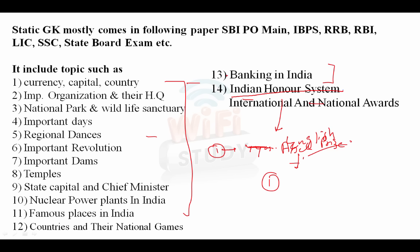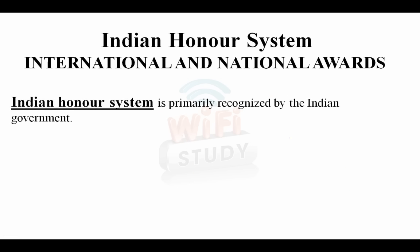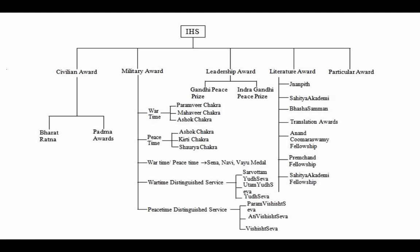The Indian honor system is primarily recognized by the Indian government. It is divided into five categories in which different awards are given. First is the civilian award — Bharat Ratna and Padma Awards. Bharat Ratna is the biggest civilian award of India. The Padma Awards are also civilian awards given to citizens and international persons.